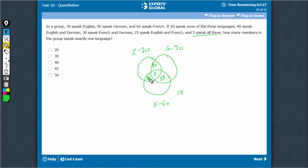So 35, 40, 60, this is 70, so this becomes 10. 35, 40, 65, 90, so this becomes 25. 25, 30, 50, 60, so this becomes 10. How many speak exactly one language? 10 plus 25, 35 plus 10, 45.